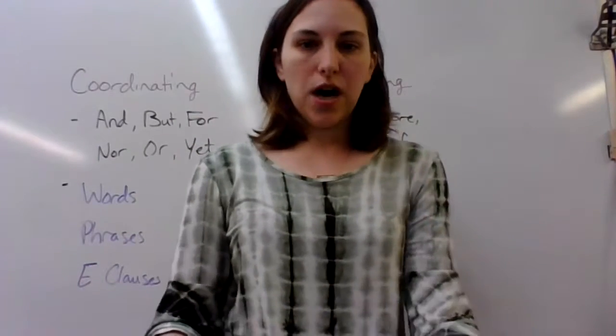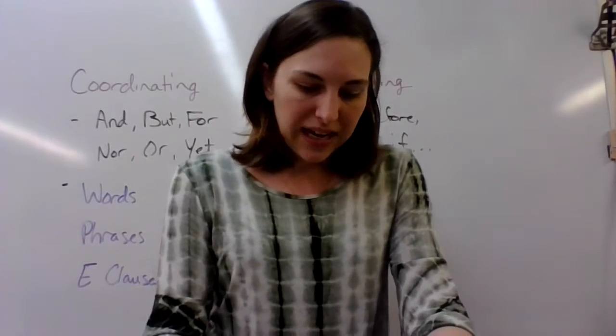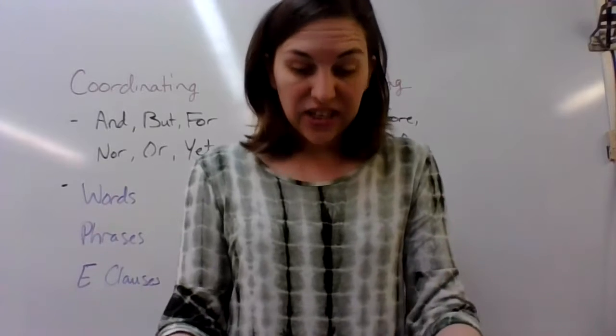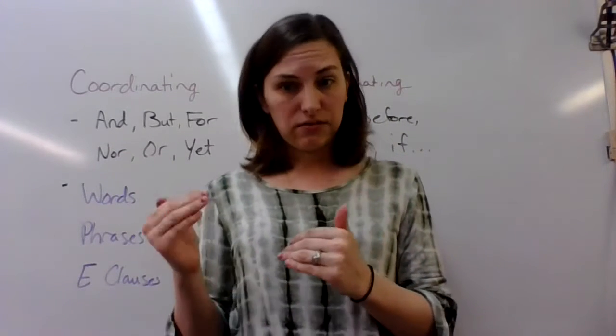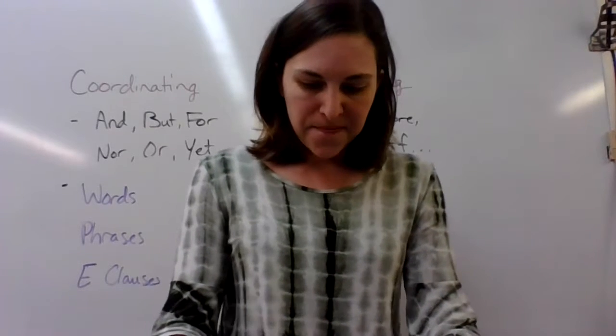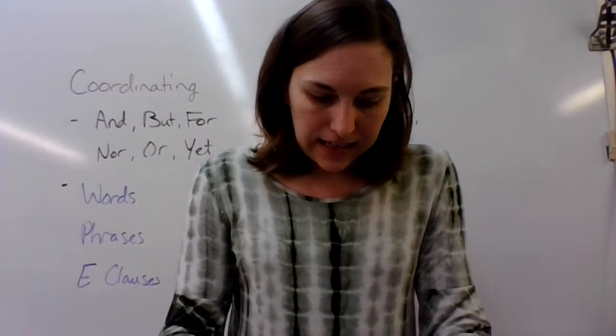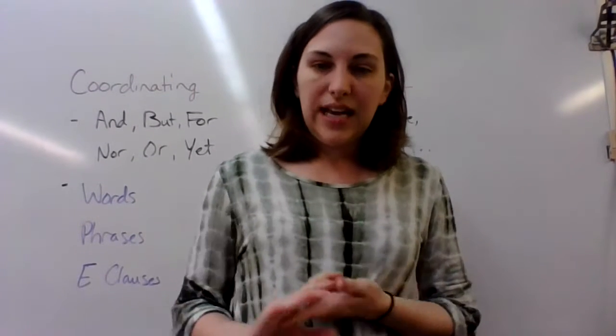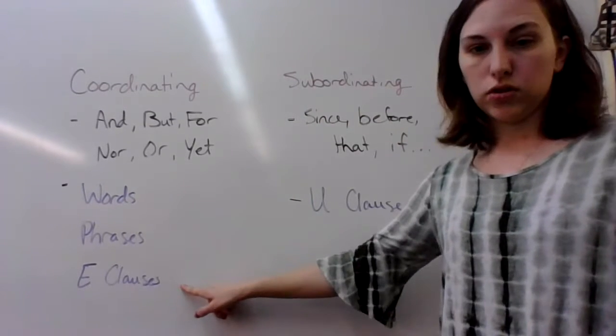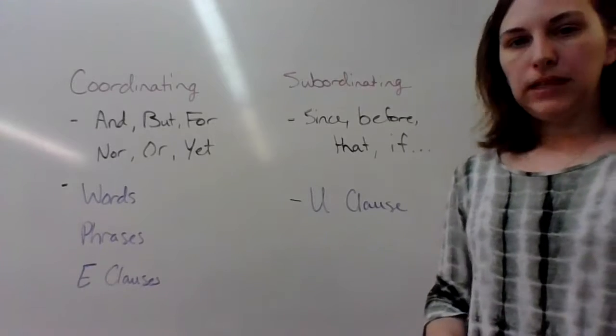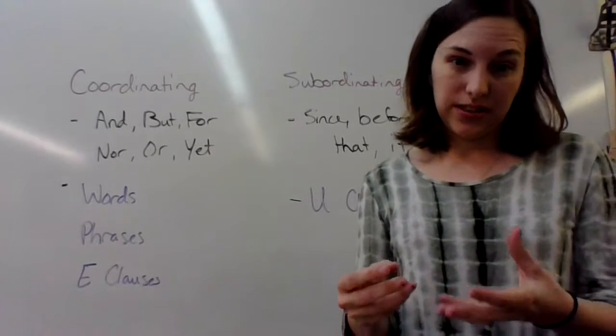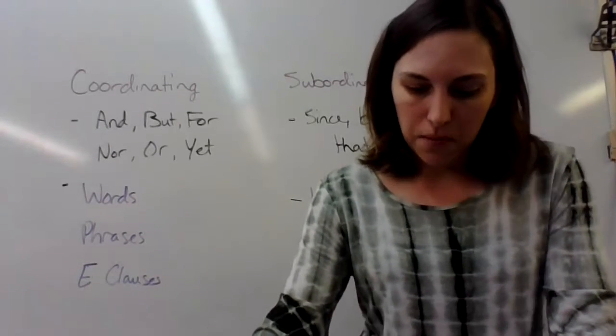Look at exercise A. I want to do a couple of them with you. Exercise A wants you to find the conjunction first. Maybe you want to just pause the video and go through your sentences and find all your conjunctions. And then, on the line, it wants you to tell what is it joining. Words, phrases, or equal clauses or unequal clauses. And, again, you have to look at the conjunction kind of to find that.